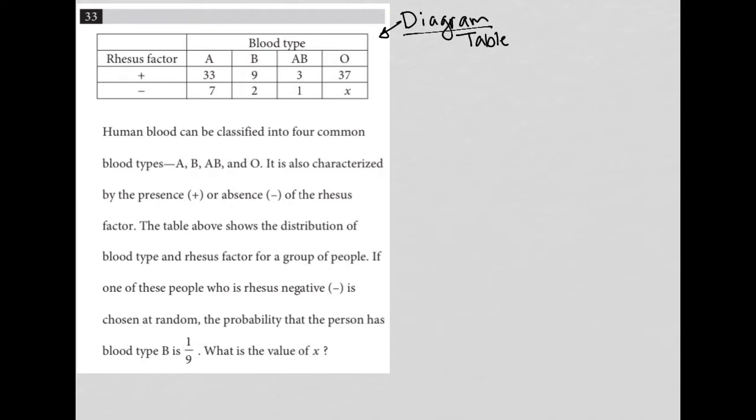So let's check out the table and then read the question here. We have rhesus factor, either positive or negative. We have blood types A, B, AB, and O. We have numbers inside of each of these cells. Looks like we have an unknown number here, which is interesting.